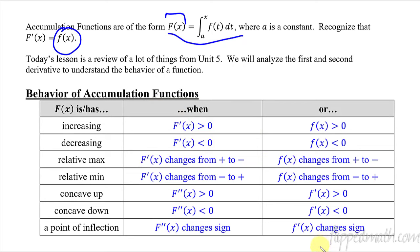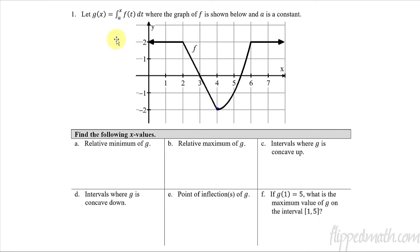So let's take this and now try a problem. We have an accumulation function going from a to x, some unknown constant. And we have the graph of f. So what we want to know is when is the relative minimum, what is a relative minimum of g? Where is it happening? So we're looking for the x values. Not what is it, but where is it?